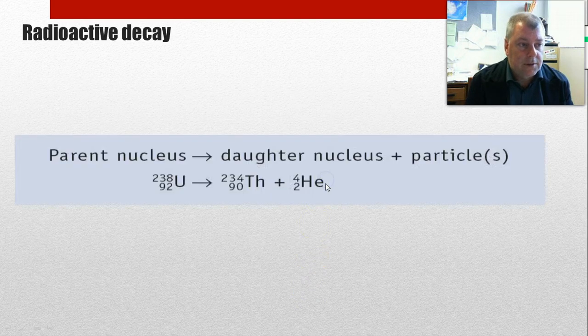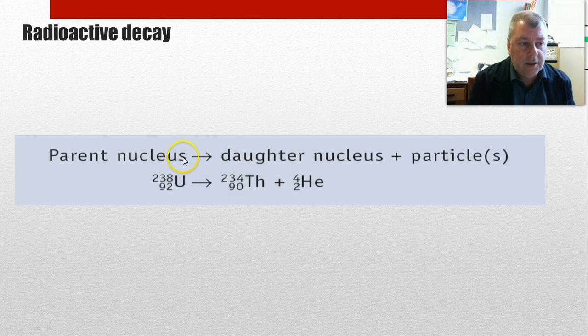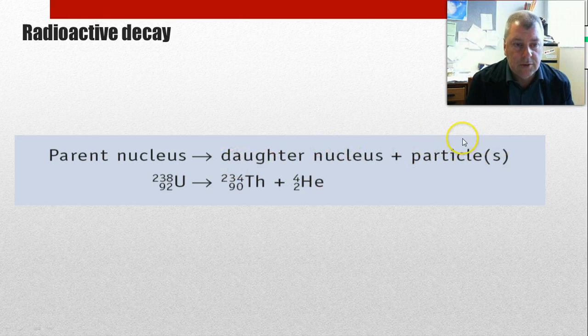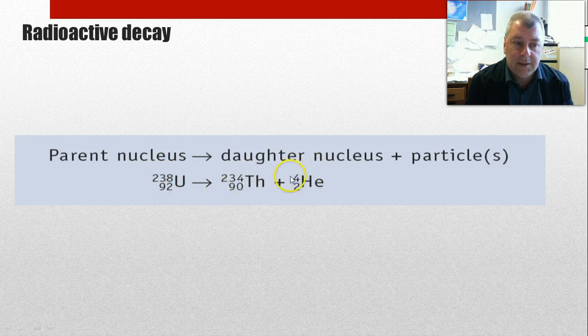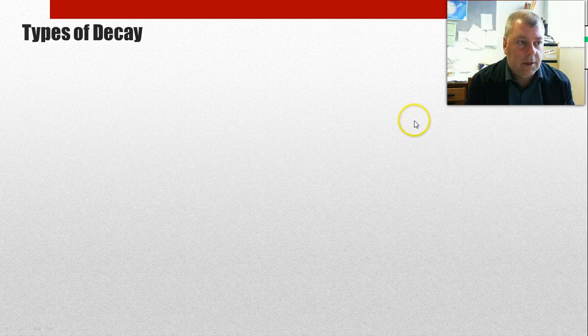So in terms of the decay, the basic definition is you have a parent nucleus, which undergoes radioactive decay into a daughter isotope plus a particle. And in this case, they've used uranium-238 decaying to thorium-234 plus an alpha particle. But let's just recap the types of decay that we're going to look at.